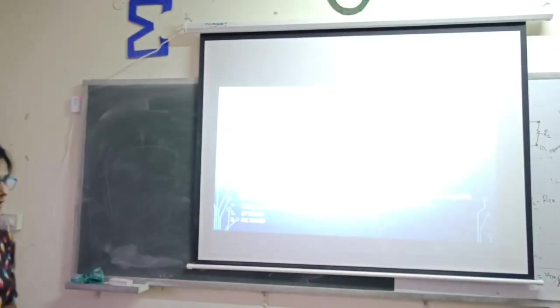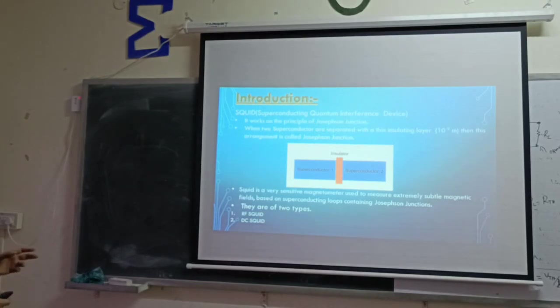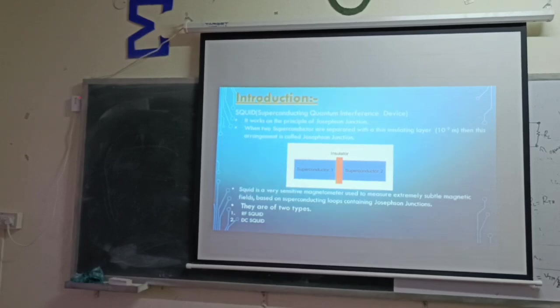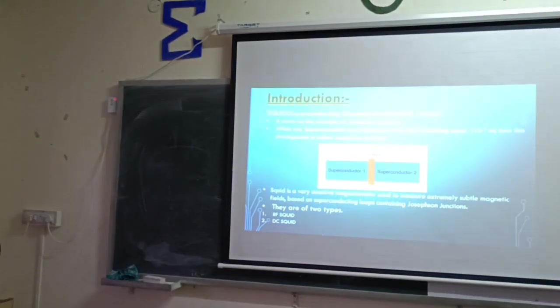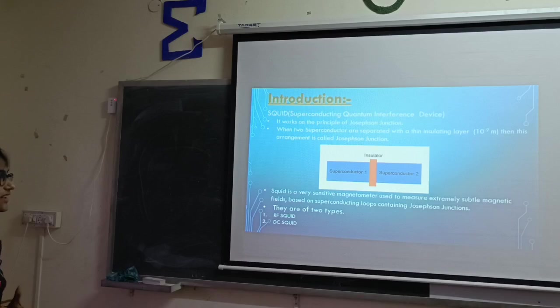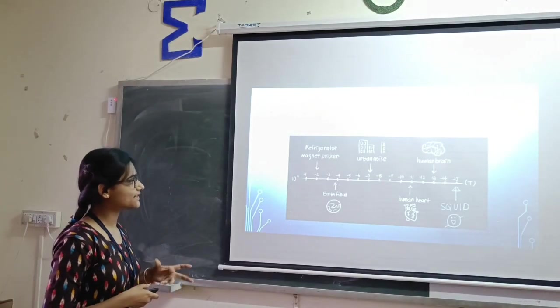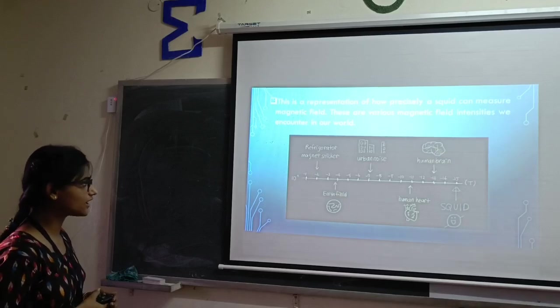In introduction, SQUID stands for superconducting quantum interference device. It works on the principle of Josephson junctions. When two superconductors are separated with a thin insulating layer, that is 10 to the power minus 9 meter, then this element is called Josephson junction. It is an AC-sensitive magnetometer used to measure extremely subtle magnetic fields based on superconducting loops containing Josephson junctions. It is of two types, AC squid and DC squid. This is the representation of how precisely a squid can measure magnetic fields. There are various magnetic field intensities to encounter in our world.